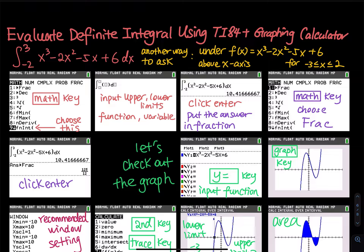Or if the book asks you to approximate to two decimal places, then that is easy — that will be 10.42. But trust me, they will just ask for a fraction to make you do more work.